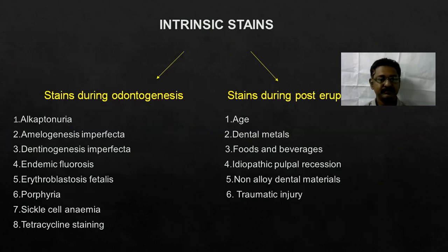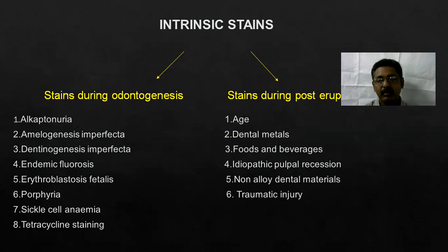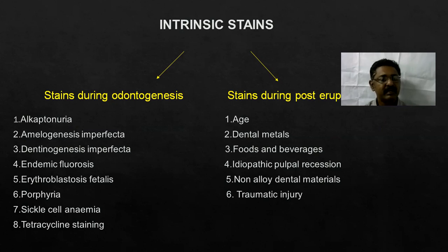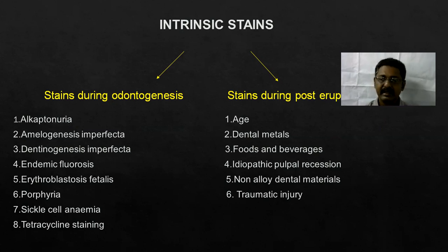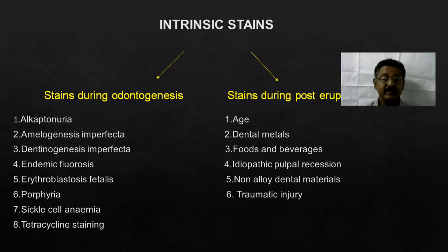Then coming to intrinsic stains — stains due to odontogenesis, that is pre-eruption, and stains during post-eruption. Pre-eruptive causes: alkaptonuria, amelogenesis imperfecta, dentinogenesis imperfecta, fluorosis, erythroblastosis fetalis, porphyria, sickle cell anemia, and tetracycline staining. Post-eruptive causes: age, dental materials we use, foods and beverages, idiopathic pulpal recession, non-alloyed dental materials, and traumatic injuries.